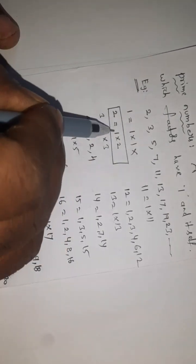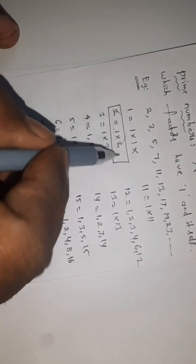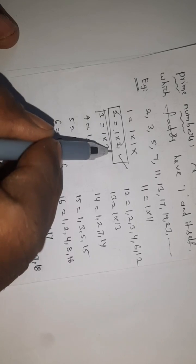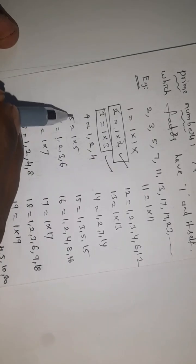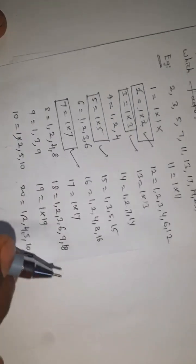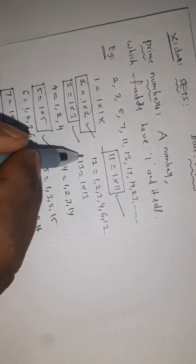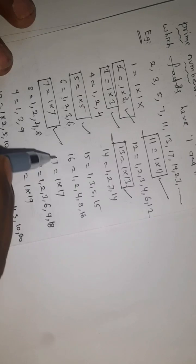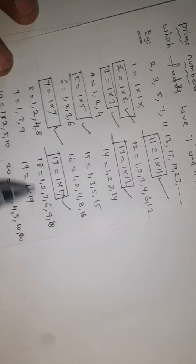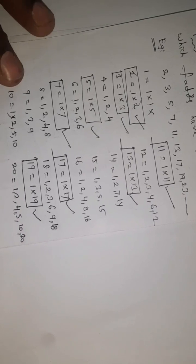One and itself means the number has only these two factors - this is a prime number. 3: one and itself. 5: one and itself. 7: one and itself. 11: one and itself. 13: one and itself. 17: one and itself. 19: one and itself. These are all prime numbers.